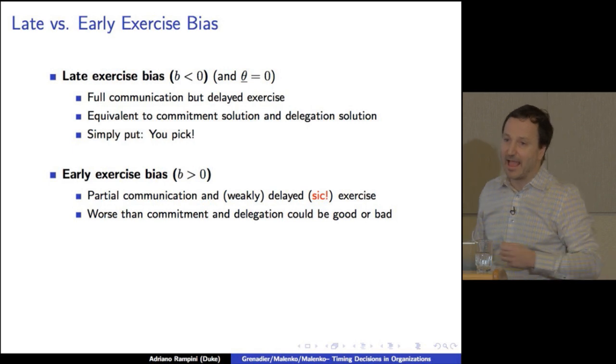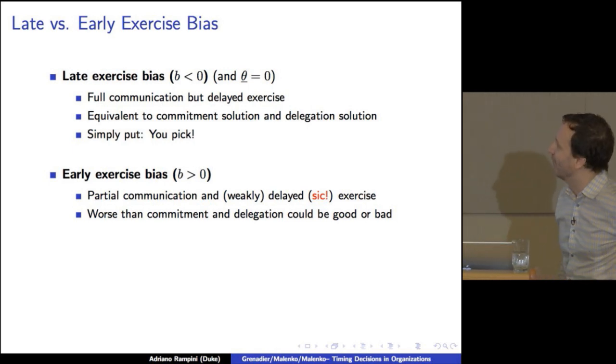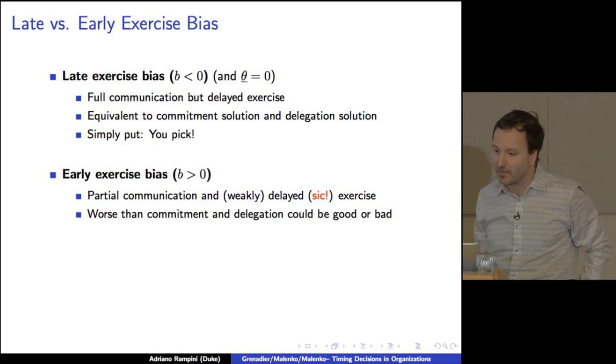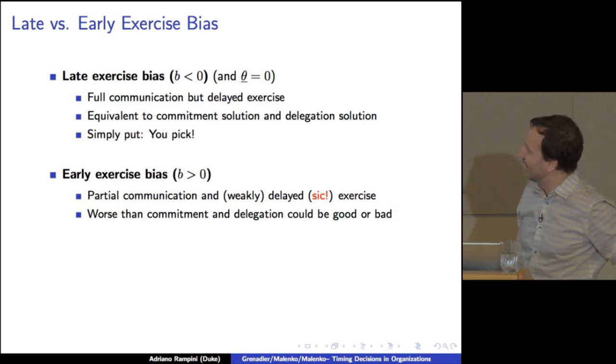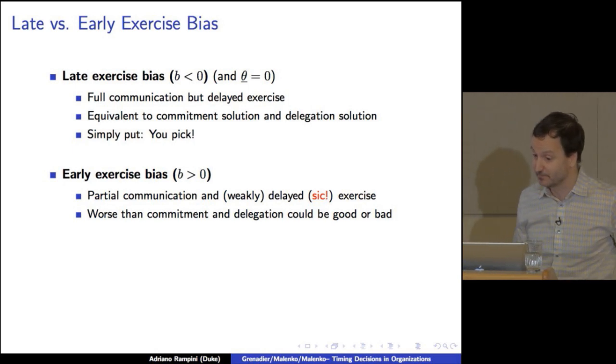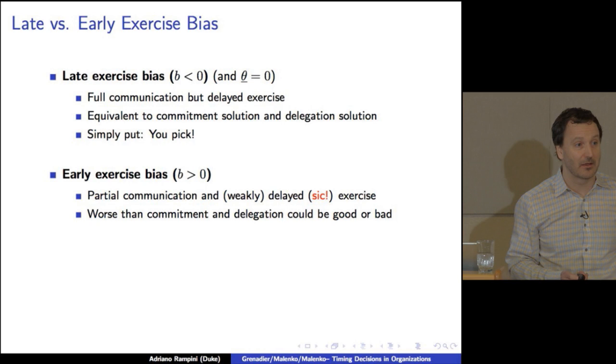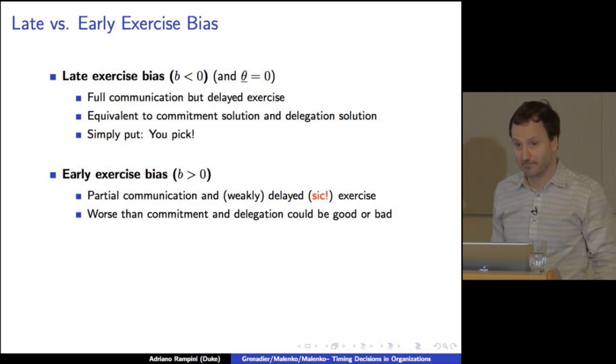So what happens? If the agent dislikes exercising, so prefers late exercise, then what happens is you can actually fully communicate the information, but the exercise is delayed. It turns out that that solution is equivalent to what the principal can do, even if he has commitment. Okay? And in fact, it's also true, at least when theta is zero, you can actually also implement the same allocation with delegating. Essentially, in the late exercise case, it's very simple. You just tell the agent you pick.